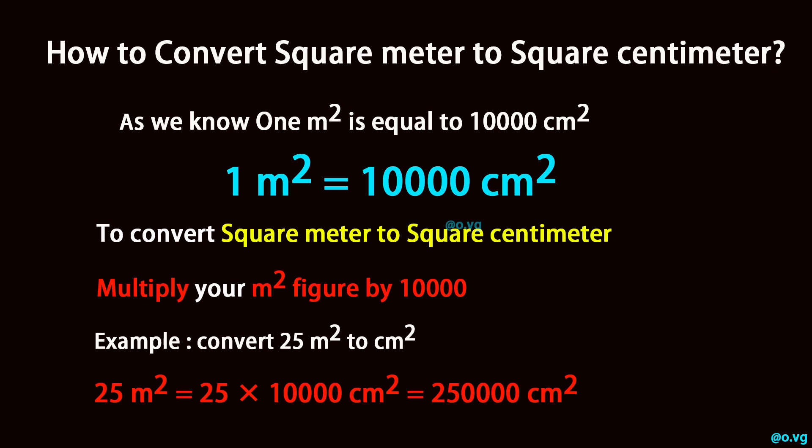To convert square meter to square centimeter, multiply your square meter figure by 10,000.